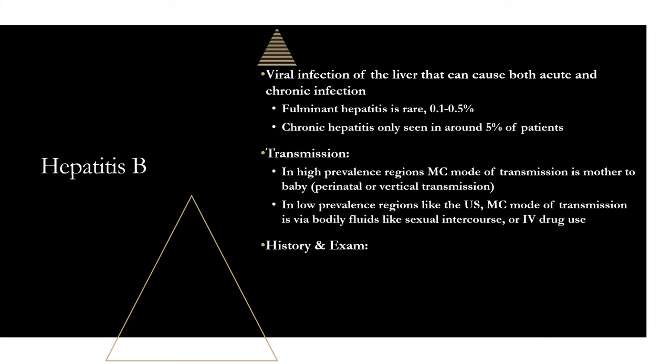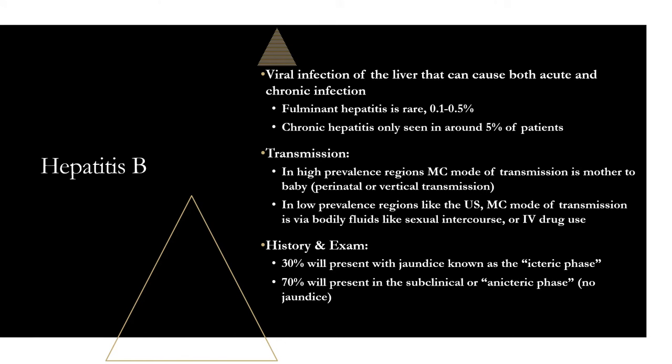For history and exam with hepatitis B, about 30% of patients will have the icteric phase — meaning jaundice. The other 70% will be subclinical or anicteric, with no jaundice. Otherwise, you'll see fever, nausea, vomiting, and malaise. In a vignette, jaundice alone won't tell you this is hepatitis B, so history and exam isn't very high yield for hepatitis.